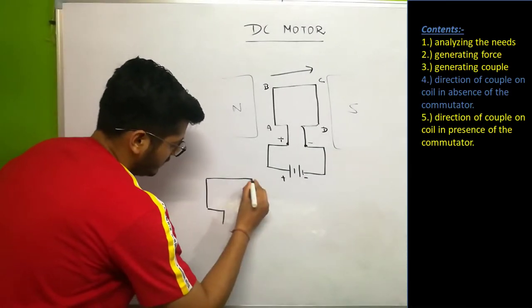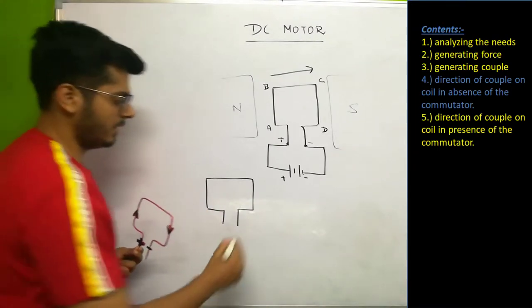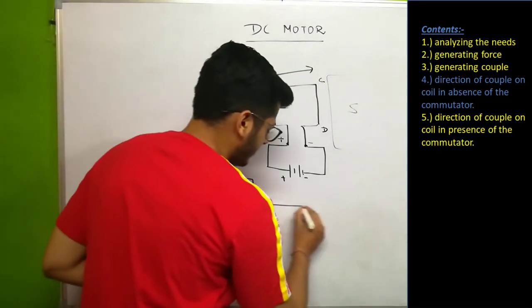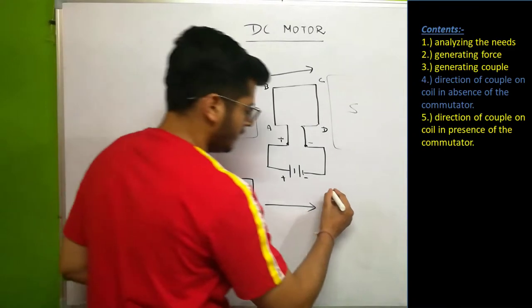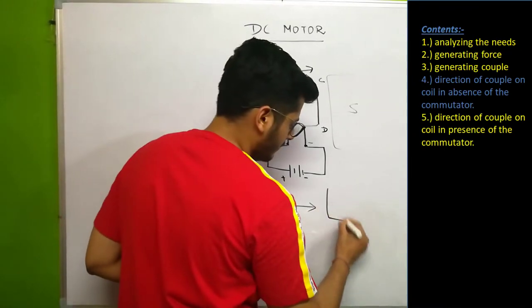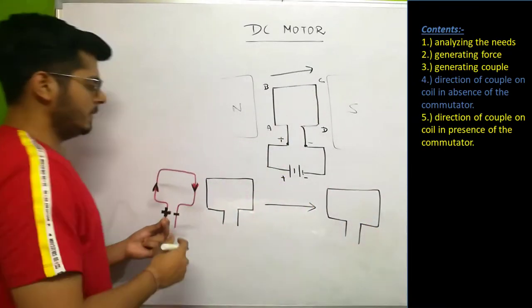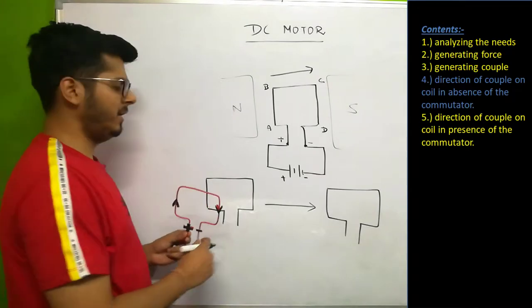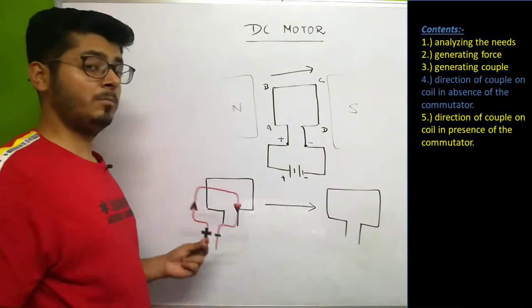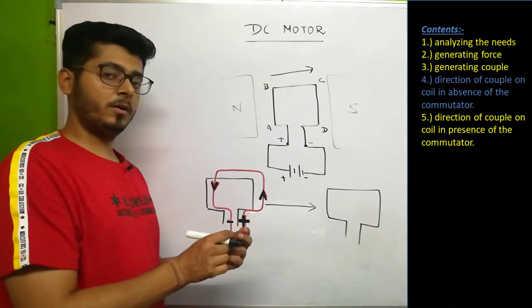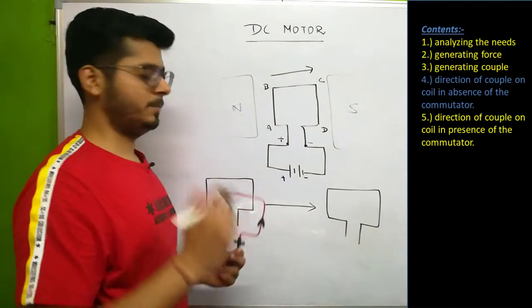This is the first case of the coil, and after 180 degrees of rotation, the second case looks like this. What should be the direction of couple in each case? If it remains the same throughout, the body will complete the rotation and work as a motor.